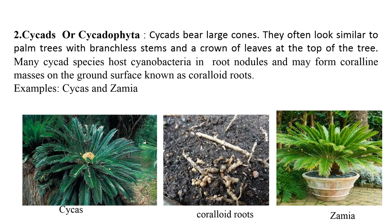Cycads bear large cones and look like palm trees because of the shape of their large compound leaves. Many cycad species host cyanobacteria, also known as blue-green algae, in their roots, forming coralloid masses on the ground surface known as coralloid roots. These cyanobacteria fix atmospheric nitrogen into a form usable by plants. Examples of cycads are Cycas and Zamia.